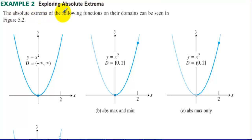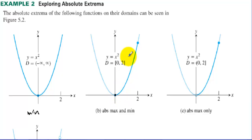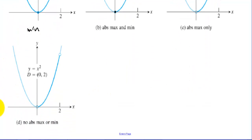Exploring Absolute Extrema. The absolute extrema of the following functions on their domains can be seen in figure 5.2. Here's an example with one minimum on the entire graph of x squared. If we go from 0 to 2, we have a minimum and a maximum at the endpoints. With an open dot, the function doesn't have a minimum value — it creeps up on (0,0) forever. If both endpoints are open dots with no min or max in between, then there's no minimum or maximum.